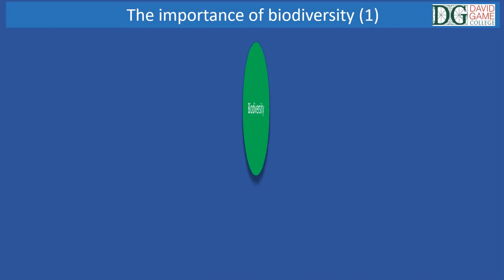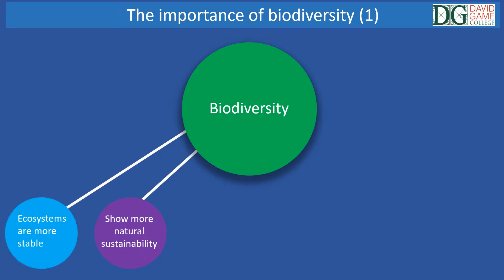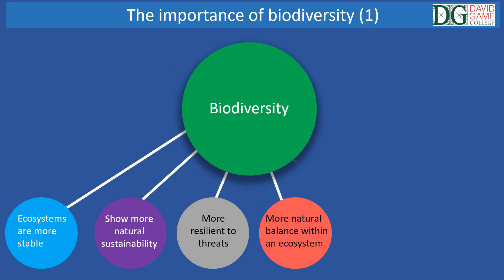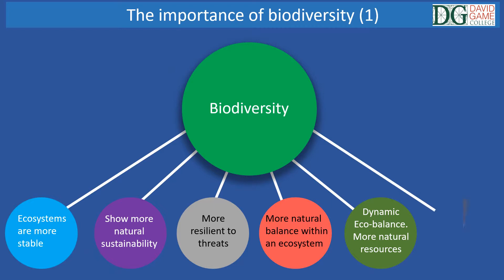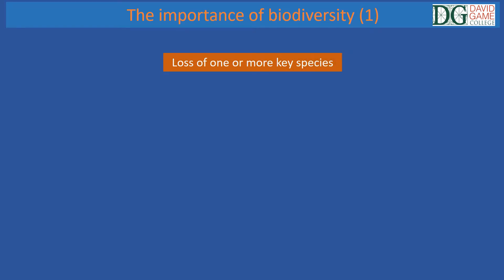Biodiversity is important for a number of reasons, including that ecosystems tend to be more stable, show natural sustainability, and are more resilient to threats. It also helps maintain a natural balance within an ecosystem and create a dynamic eco-balance. Furthermore, it helps provide numerous natural resources for other plants, animals, and humans — food, pharmaceuticals, and other resources such as wood and rubber are all extracted from areas of high biodiversity. The loss of one or more key species from an ecosystem can have serious negative effects that over time can collapse an ecosystem.